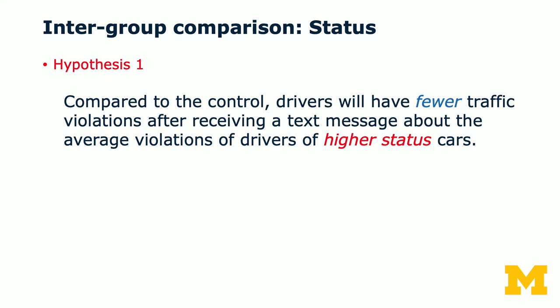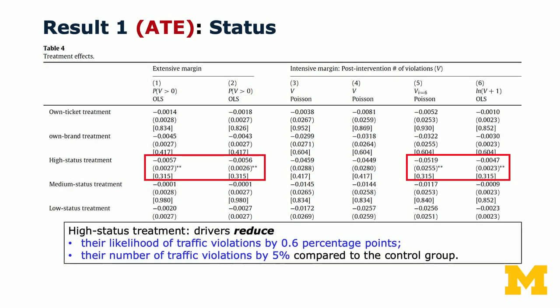We derived a set of hypotheses by applying social science theory to our specific setting. Compared to the control group, drivers will have fewer traffic violations after receiving a text message about the average violations of drivers of high-status cars. Note that each driver in our sample has had at least one violation, so 0.6 is less than one. High status also has, as we'll see, an effect on driver behavior. The first result computes the average treatment effect — this is Table 4 in the paper. The omitted variable is the control condition, so everything shown is relative to the control.